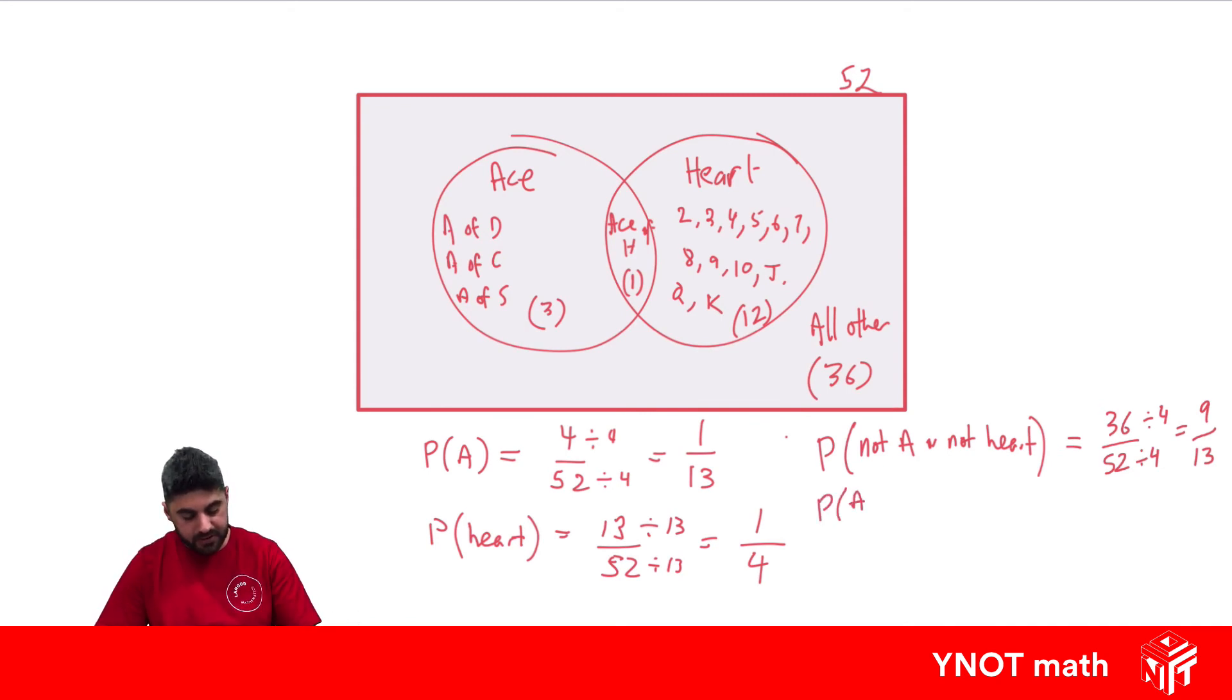The probability that it's an ace and a heart? Well, we know there's only one of those that's an ace and a heart, because that's what's in the middle. So that gives us 1 out of 52, which can't be simplified.